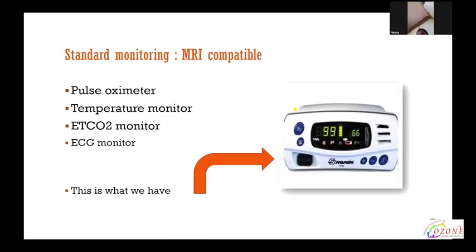Standard monitoring. MRI-compatible monitoring devices are needed. Continuous monitoring is expected. The monitors include pulse oximeter, temperature monitor, ETCO2 monitor, and ECG monitor. For MRI, we use the MRI-compatible pulse oximeter. One more thing to monitor is respiratory rate — keep a light object on the patient's chest or abdomen to observe respiratory movements from a distance.